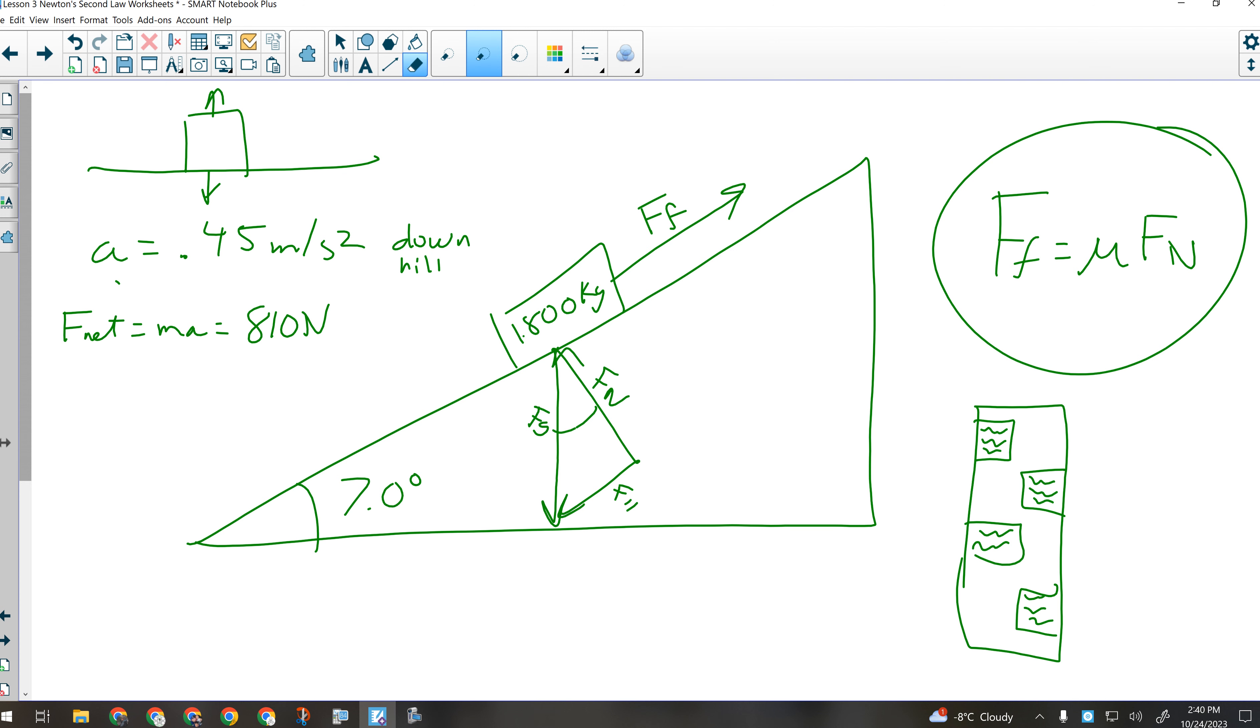We also need the force of gravity. All right, we need the weight acting straight down. So that's going to be M times G. 17,658. Is that right? Yeah. Mine made a steel trap.